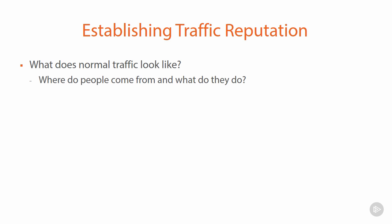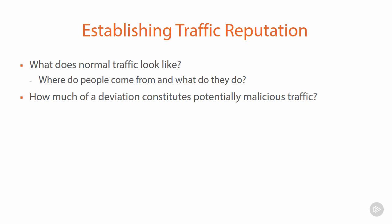Sudden influxes of traffic that don't adhere to that normal pattern would immediately be treated as suspicious. The trick is to establish how much of a deviation is required before you start to consider the traffic malicious. Conceptually, we know what good traffic looks like. If it is different, then we're less confident it's going to be legitimate — the reputation goes down. Many DDoS defense mechanisms rely heavily on reputation.